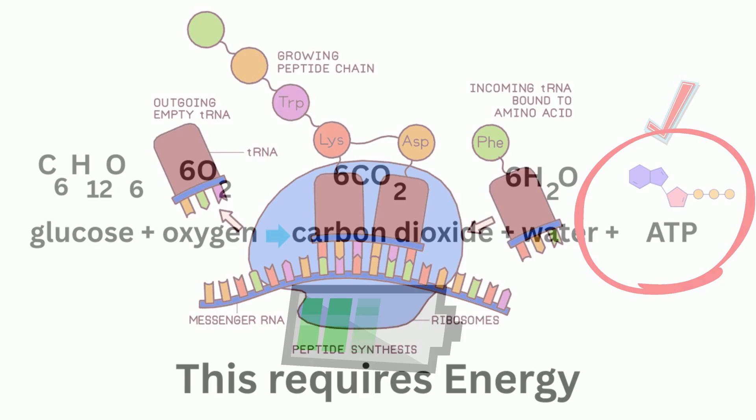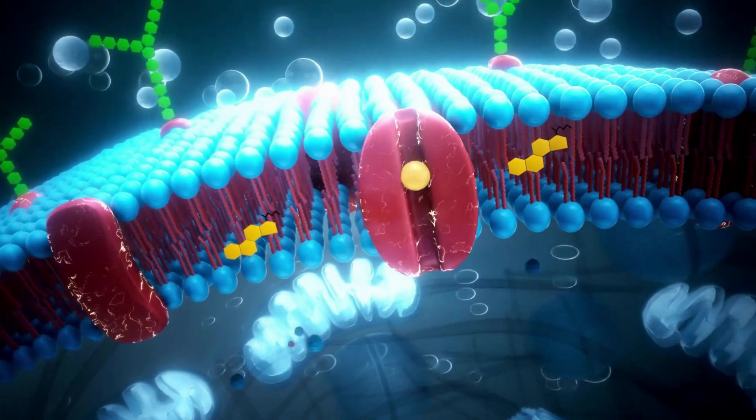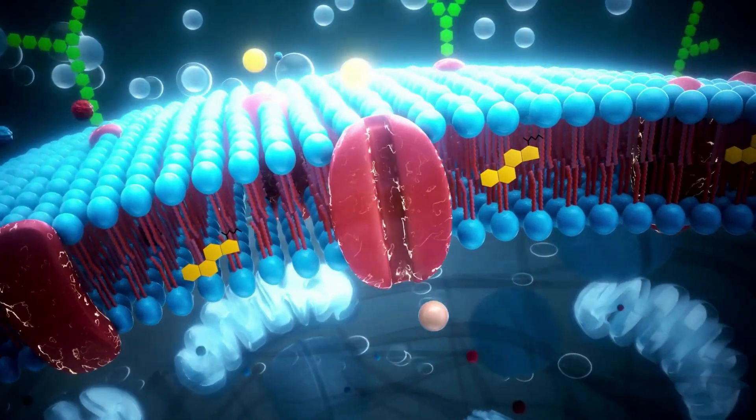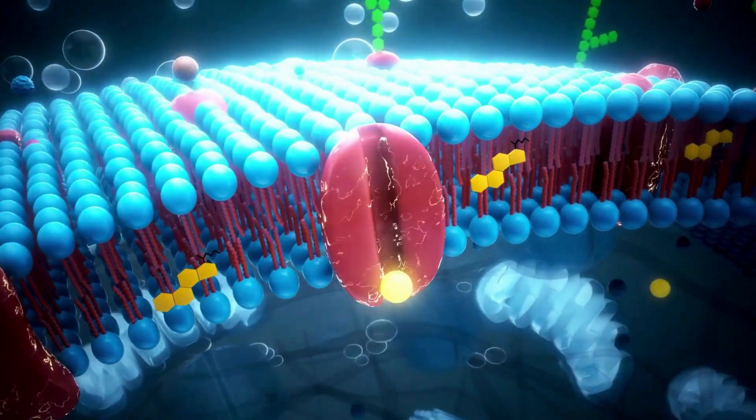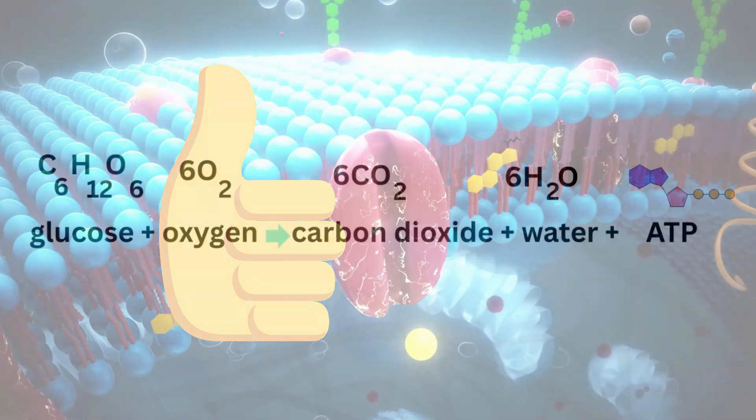ATP allows the cells to make proteins, power pumps, power active transport. Basically, it powers everything needed to keep the cell alive. What's the formula for cellular respiration?